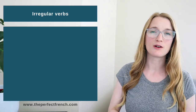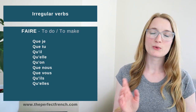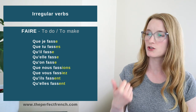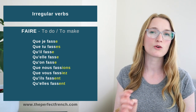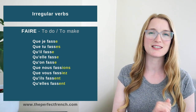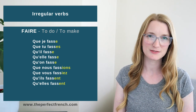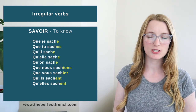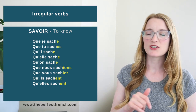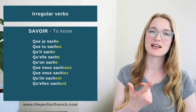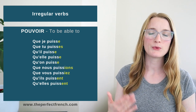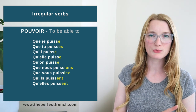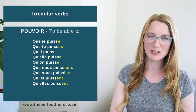Next point: the irregulars with an irregular stem. Faire — the stem is going to be f-a-s-s: que je fasse, que tu fasses, qu'il/qu'elle/qu'on fasse, que nous fassions, que vous fassiez, qu'ils/qu'elles fassent. Savoir — the stem is s-a-c-h: que je sache, que tu saches, qu'il/qu'elle/qu'on sache, que nous sachions, que vous sachiez, qu'ils sachent. Pouvoir — the stem is p-u-i-s-s: que je puisse, que tu puisses, qu'il/qu'elle/qu'on puisse, que nous puissions, que vous puissiez, qu'ils puissent.